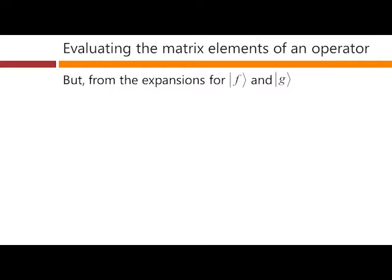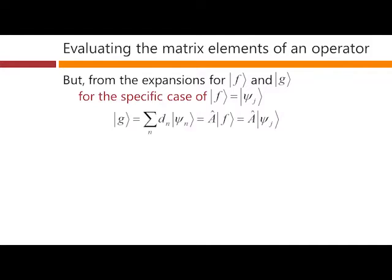But from our expansions for f and g, for the specific case where f is just ψj, then g is equal to of course its expansion dn ψn, and that's A times f. And in this specific case because f is ψj, that's A times ψj.